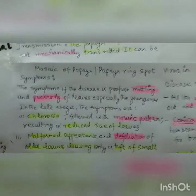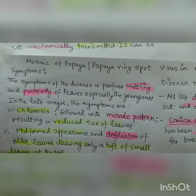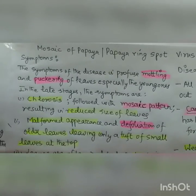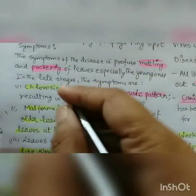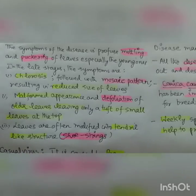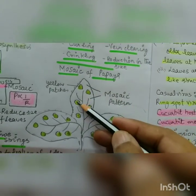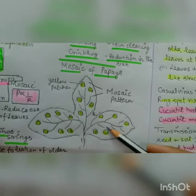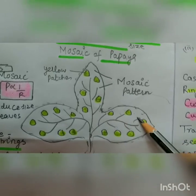The second disease is the mosaic of papaya, also known as papaya ring spot, which has similar symptoms. The symptoms of the disease include profuse mottling and puckering of leaves. In later stages the symptoms are chlorosis followed by a mosaic pattern, resulting in reduced size of leaves. The leaf shows patches of chlorosis — yellow, green, yellow — and this is called the mosaic pattern.